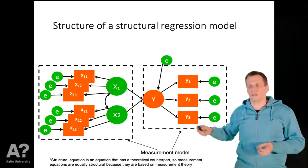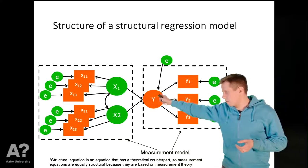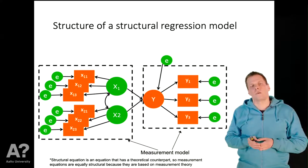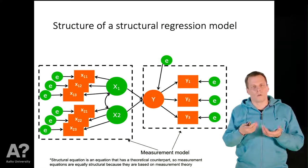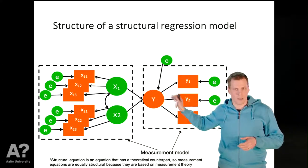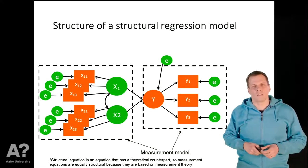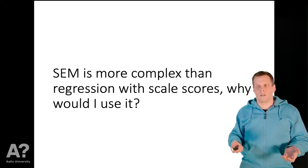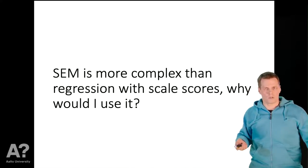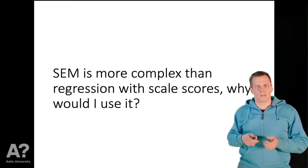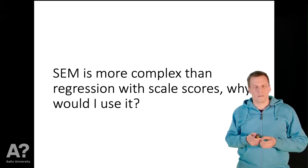The outer part linking the observed measures to the factors is called the measurement model — this is the uniformly accepted definition. So whenever anyone talks about the measurement model, it means the part that links the latent variables to their indicators. This is a big and complicated model. The question is: why would you want to use this more complicated approach over simply taking a sum of indicators and using regression analysis?